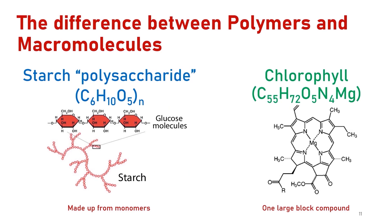For example, starch is a polysaccharide made by linking glucose monomers together, whereas macromolecules don't have to be polymers. For example, chlorophyll is a macromolecule with a high molecular weight, and yet it is not considered to be a polymer.